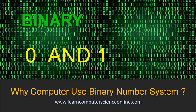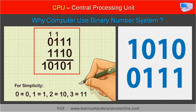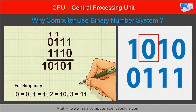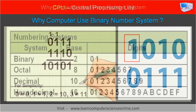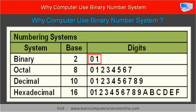All of us know that the computer understands the language of only two numbers, and in mathematics it is referred to as binary zero and one. The binary number system is a base-two number system that uses only two numbers — zero and one —